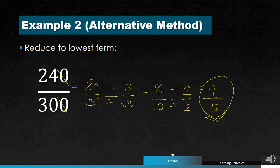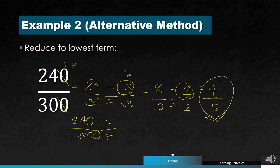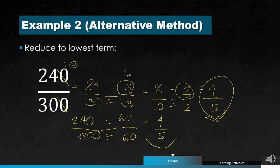Going back, canceling the trailing zero means the common factor was 10, and the continuous division used 3 times 2 which gives 6. So the GCF of 240 and 300 is 10 times 6, which is 60. If we divide both 240 and 300 by 60: 240 divided by 60 is 4, and 300 divided by 60 is 5. Same answer either way — the lowest term of 240 over 300 is 4 fifths. Thank you very much.